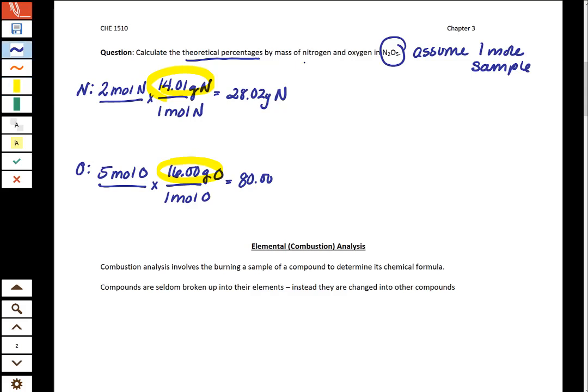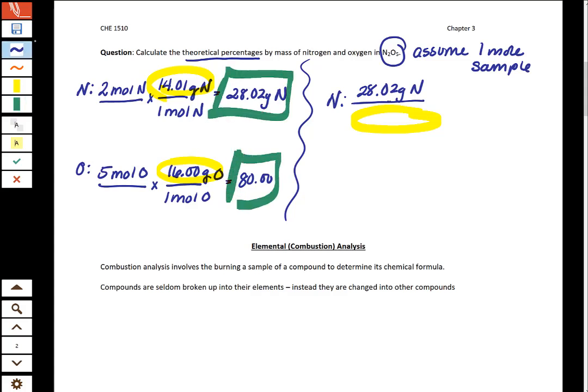So now that we've kind of done our background work, let's get down to answering the question. Remember that in our question our percentages were always a part over a whole. So for your nitrogen, your part is the 28.02 grams of nitrogen that you have in your one mole sample. And so down here at the bottom we need to have a mass of the sample. Well if your sample is one mole then you need to put in the molar mass of the sample which just so happens to be these two numbers added together. So the molar mass of our sample is going to be 108.02 grams of our sample. And then we'll multiply that by 100.